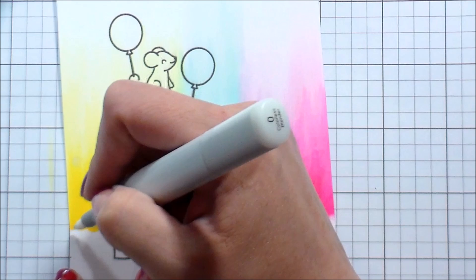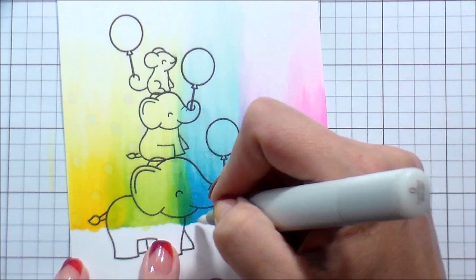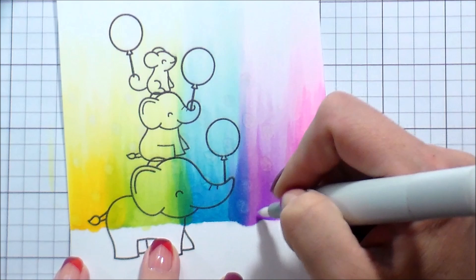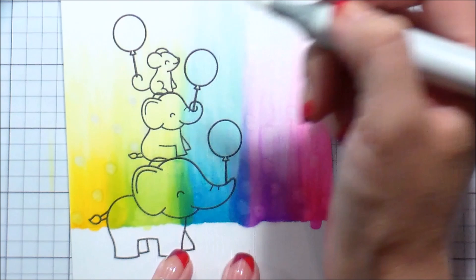So now that all of the base colors are down, we're going to start in with the technique. So you want to make sure that you fill your colorless blender marker. You don't want to go in with a dry one because using any of your markers while they're dry will ruin your nib. So basically what I'm doing is I'm just drawing a series of medium size circles.